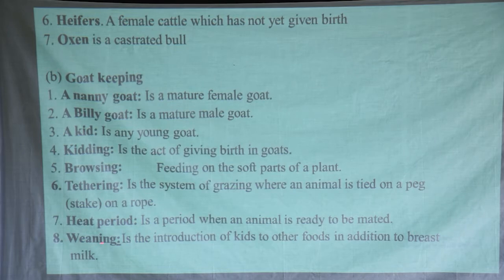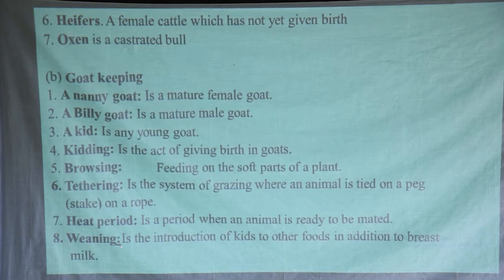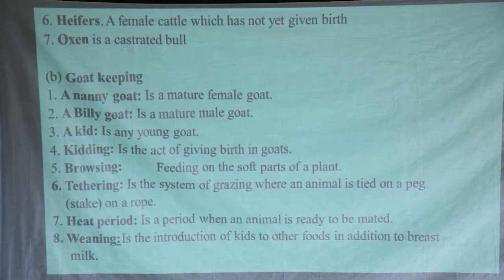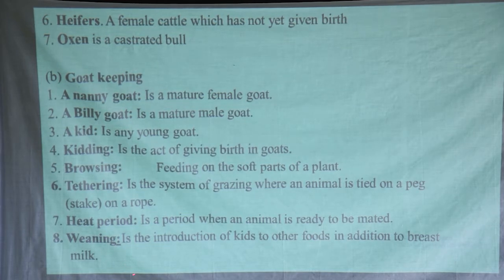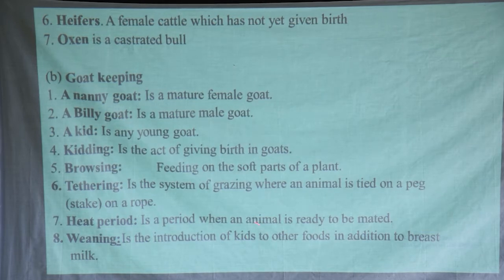The next term is weaning. After kidding or calving, at a given time, you need to make sure your animals get used to different feeds. Weaning is the introduction of kids to other foods in addition to breast milk. This can work in calves, in kids, even a baby — the mother introduces other foods to the baby in addition to breast milk. So the baby gets used to the food and at the end it will stop breastfeeding.